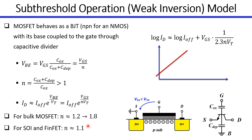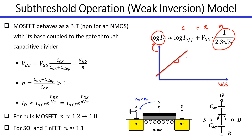For Si FinFETs, N can be significantly better; it can be as low as 1.1. So if we take this exponential equation and plot VGS on the x-axis and log ID on the y-axis, we'll find that this would be an equation of a straight line. The slope will be 1 over 2.3·N·VT, where VT is the thermal voltage equal to kT/q, which is around 26 millivolts at room temperature.